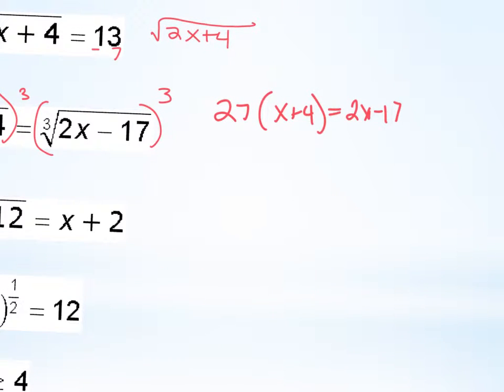And then I'm going to distribute the 27 in. So 27 times X, God bless you, 27X. And then 27 times 4, which yesterday when you discovered I was evil and I was going to give you a calculator, you would have to multiply this out.